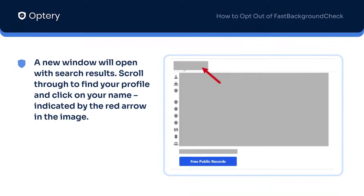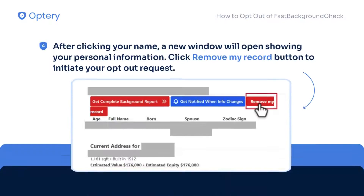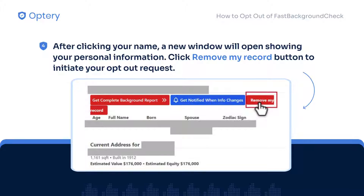A new window will open with search results. Scroll through the results to find your profile and click on your name. Once you click your name, a new window will open containing your personal information. Click the Remove My Record button to initiate your opt-out request.